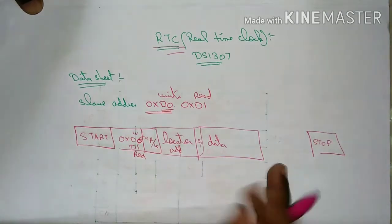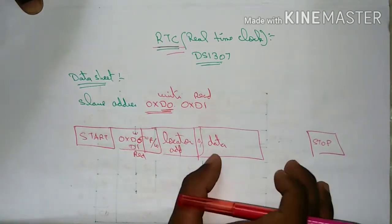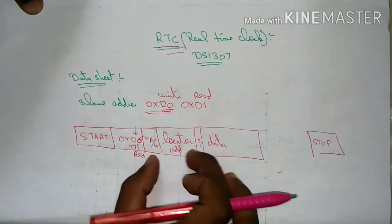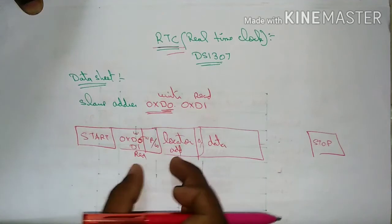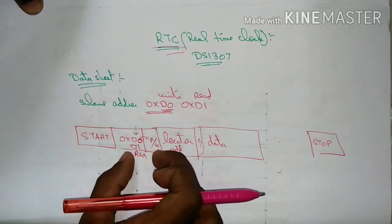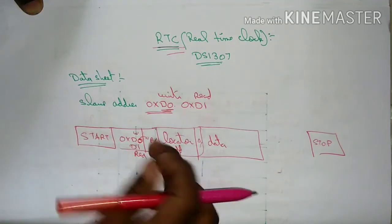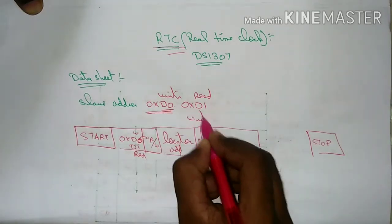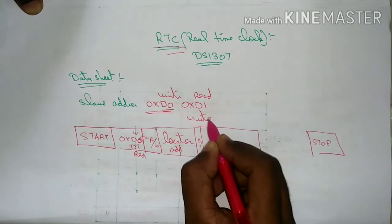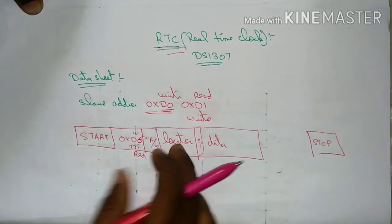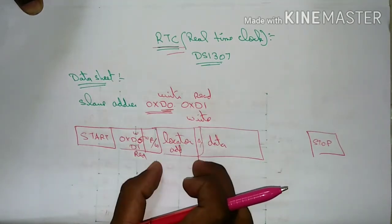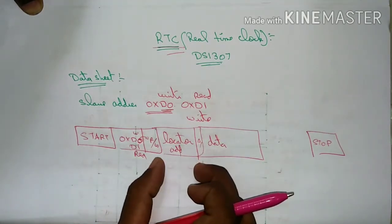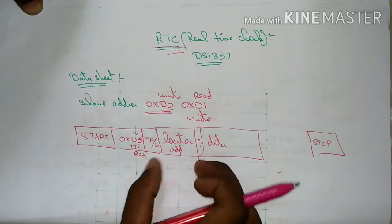This is the concept: the data is the address, the location address is the slave address. The reader is the address — we can write the right address. Then the location address is the address.